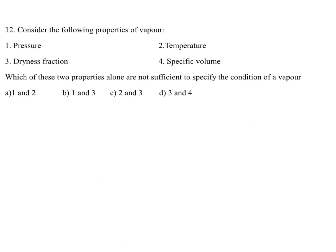Consider the following properties of vapour: 1) pressure, 2) temperature, 3) dryness fraction, 4) specific volume. Which two properties alone are not sufficient to specify the condition of a vapour? Pressure and temperature alone are not sufficient — A is the answer.